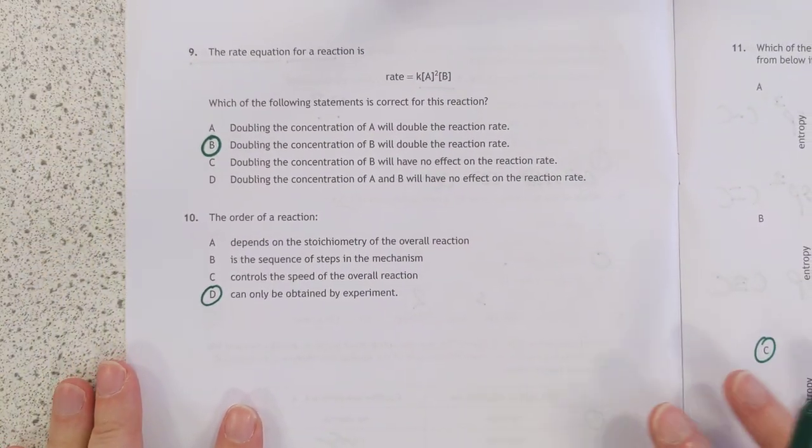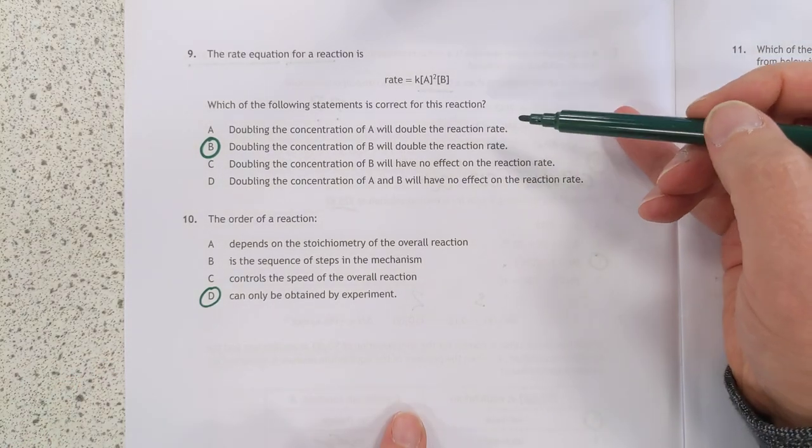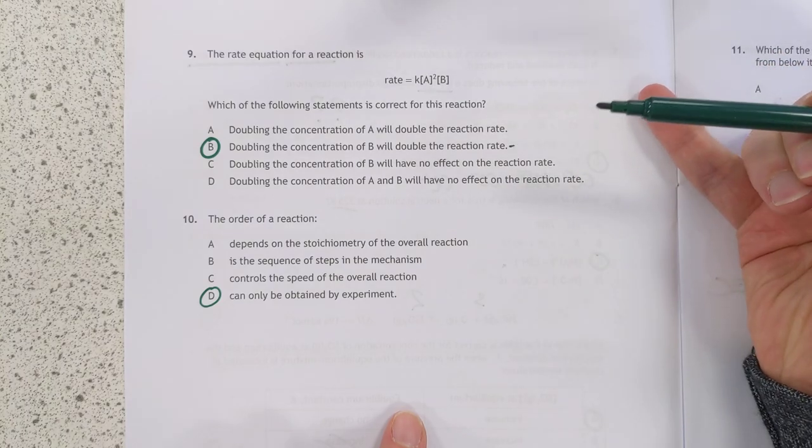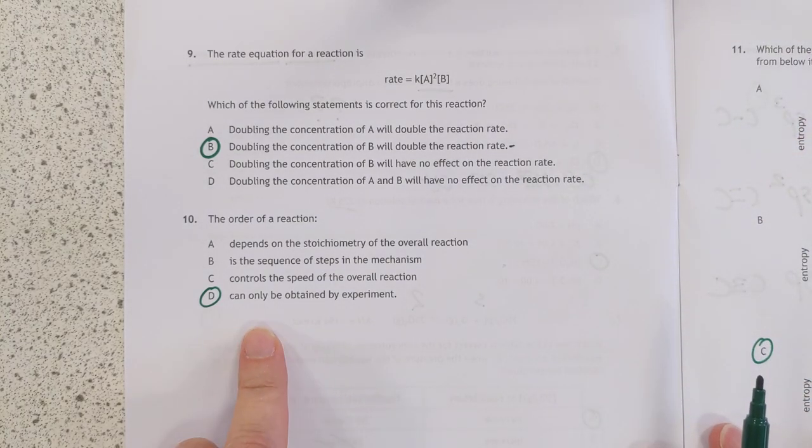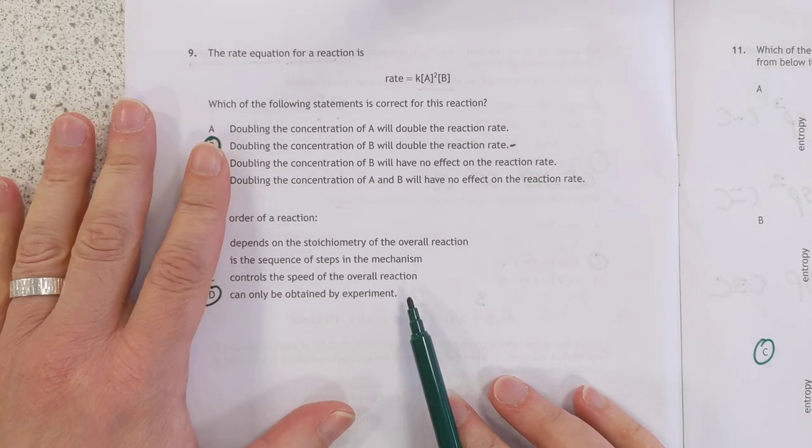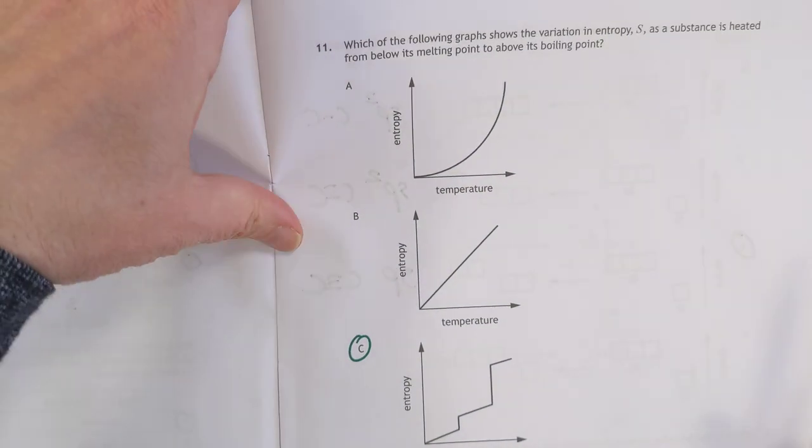Number 9 and 10. If it's second order with respect to A, first order with respect to B, then the only one there is true is that one. Number 10. The order of reaction. You can only get the order by experiment. You can't actually work it out in advance.